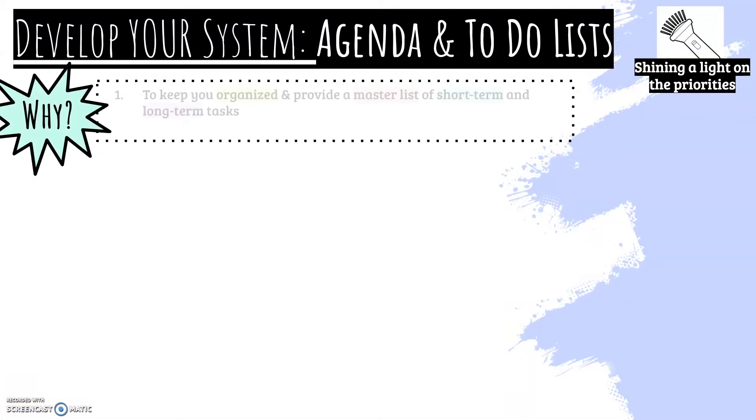Why do you want to keep an agenda system? Because what it's going to do is create a master list of short-term and long-term tasks. That way you're not forgetting things.